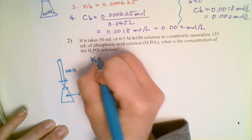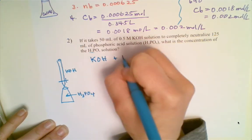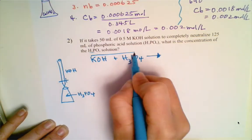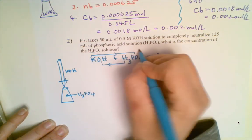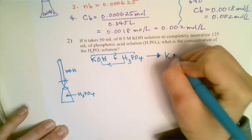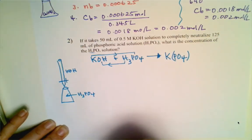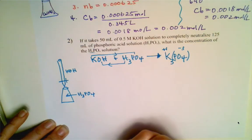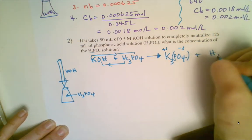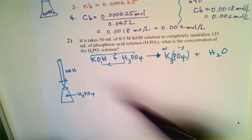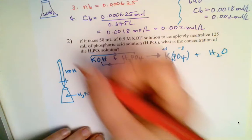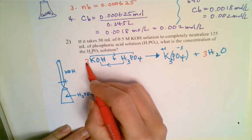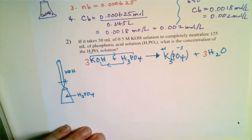Start with the balanced equation: potassium hydroxide plus phosphoric acid. Using double displacement — outside/inside hook-up — the salt produced is potassium phosphate, K₃PO₄, because phosphate (PO₄³⁻) and potassium (K⁺) crisscross to give a 3-to-1 ratio, plus water. Balancing: place a 3 in front of KOH and a 3 in front of water, giving 6 hydrogens on each side. Everything else balances. Volume of base = 50 mL, concentration of base = 0.5 mol/L, volume of acid = 125 mL.